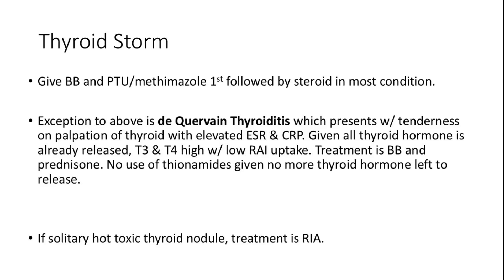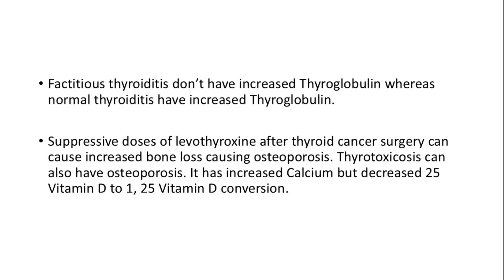Thyroid storm is a critical condition requiring immediate treatment with beta blockers and antithyroid medications. In cases like de Quervain thyroiditis, beta blockers and steroids are prioritized. Radioactive iodine is used for solitary hot nodules. Factitious thyroiditis is characterized by normal thyroglobulin levels, unlike the increased levels seen in true thyroiditis.